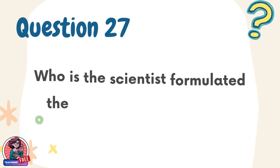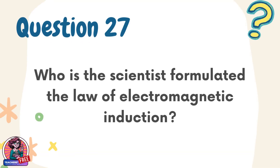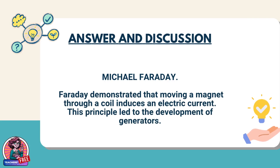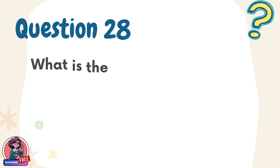Question 27. What scientist formulated the law of electromagnetic induction? Answer: Michael Faraday. Faraday demonstrated that moving a magnet through a coil induces an electric current. This principle led to the development of generators.